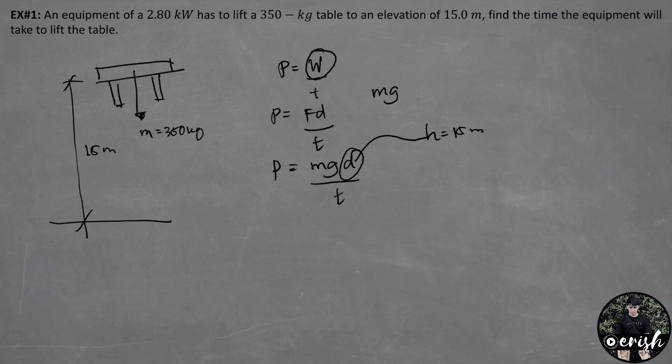Therefore, we can solve for the time. We cross multiply. Time is equal to mass times gravity times the distance or simply height divided by the power. And by substituting the values, the mass is 350 kilograms times 9.81 meters per second square times the height of 15 meters.